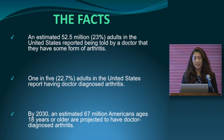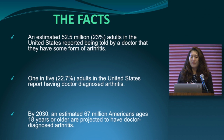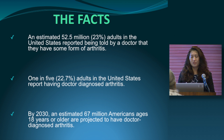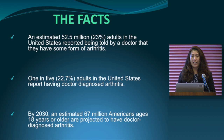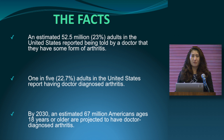These are a few facts from the CDC. We have about 52.5 million adults in the United States who have some form of arthritis, and about 22.7% of adults have been reported as doctor-diagnosed with arthritis. By 2030, an estimated 67 million Americans 18 years and older will have doctor-diagnosed arthritis.